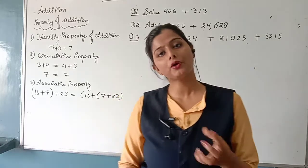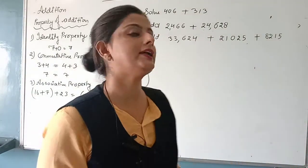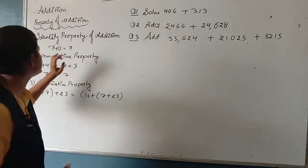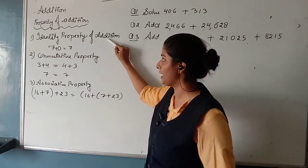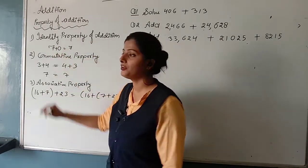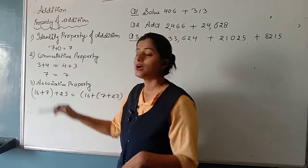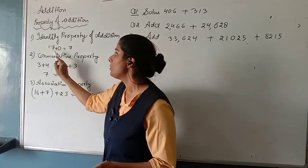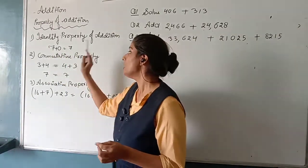So today in class we are going to start addition. You are very familiar with addition. Here I am going to start with the property of addition. Identity property of addition means if we add any number with 0, the answer will be the number itself. 7 plus 0, answer will be 7.